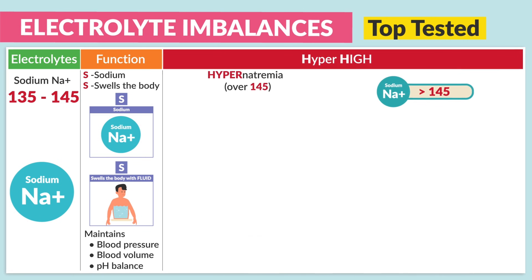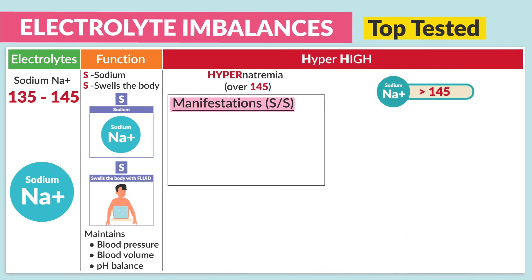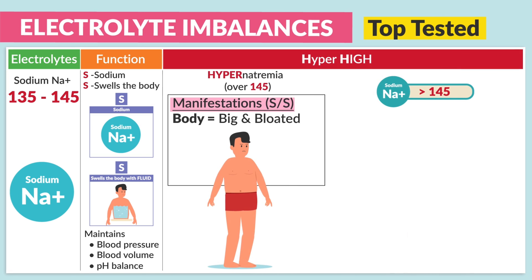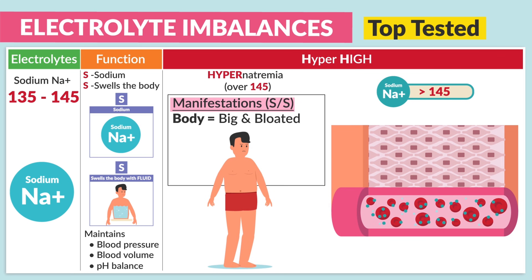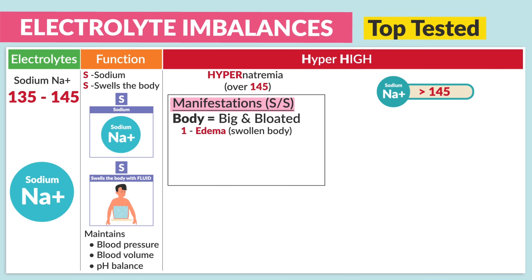For hypernatremia — over 145 — the critical manifestations: the body will be big and bloated as fluid is drawn out of the cell and into the body. Naturally, cells shrink with this hypertonic state of blood serum. Number one, we see edema: a very swollen body.